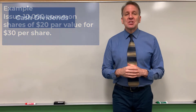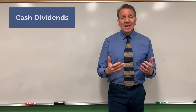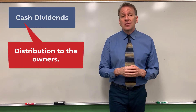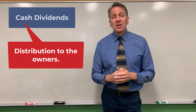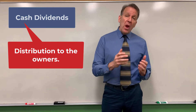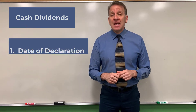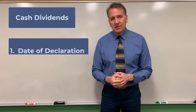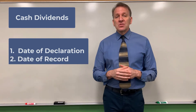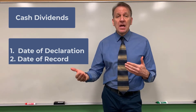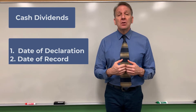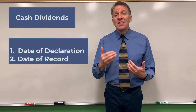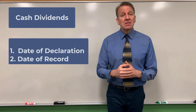Now let's move into cash dividends. If a corporation wants to declare dividends and pay out some money to their shareholders, one of the most popular ways is through a cash dividend. There are three dates to be aware of. The first is the date of declaration — when the board of directors declares the dividend. The second is the date of record, which takes place later. This is when the corporation looks to see who actually owns the shares, and those shareholders will receive the dividend.